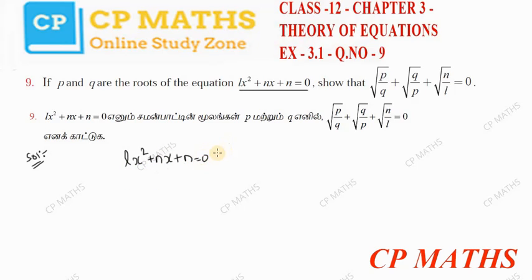This is sum of the roots. We already know the sum of the roots p and q, then p plus q is sum of the roots. The formula is minus b by a, which is minus n by l.